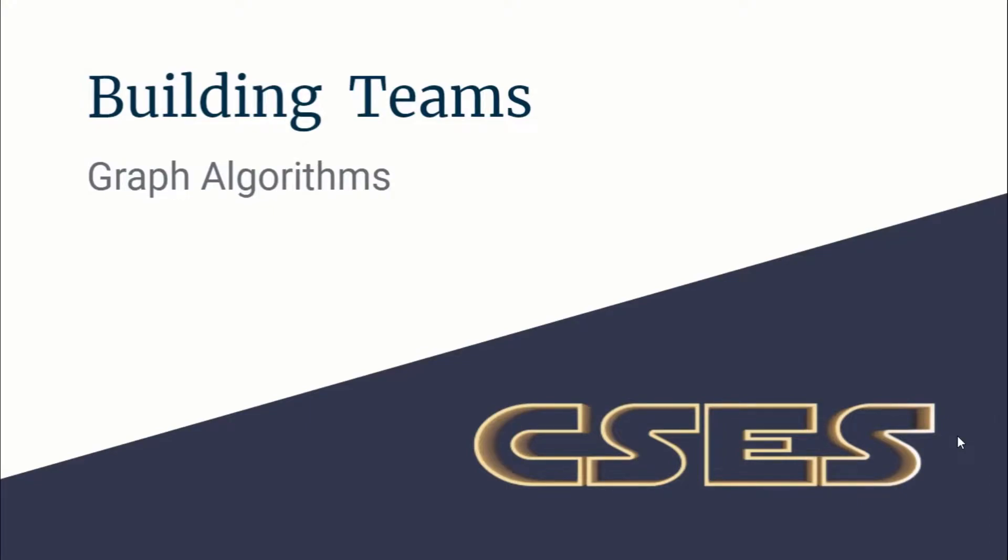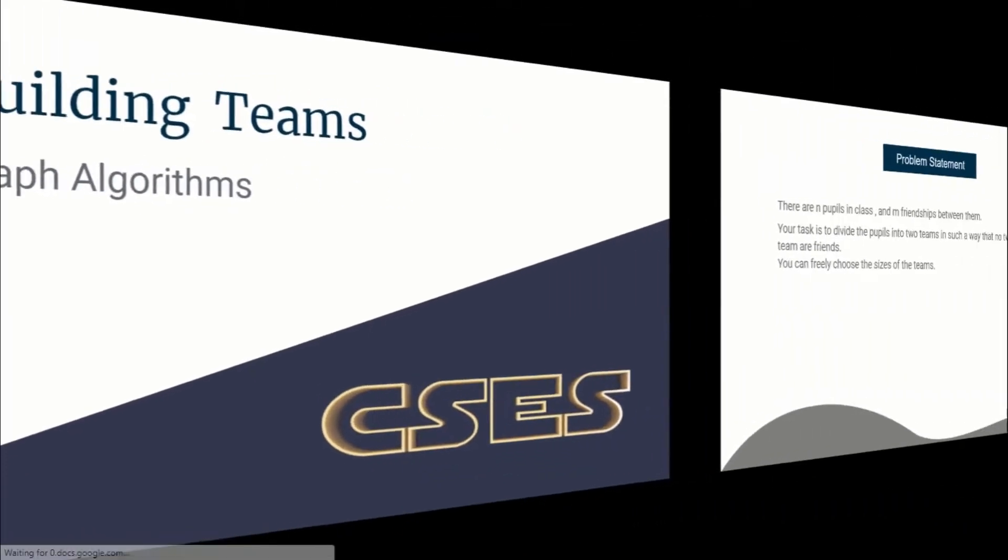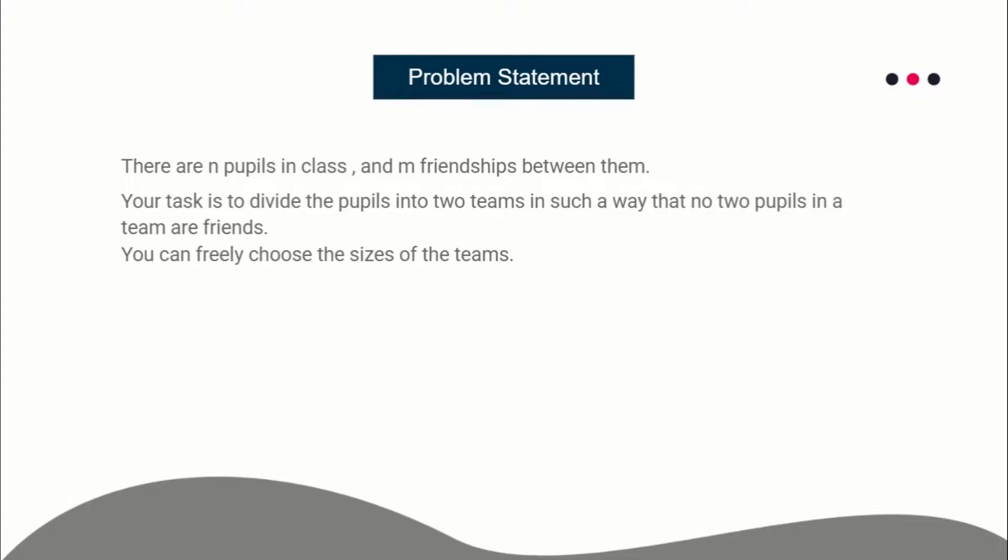Hello guys, this is Code in Code and this is a video editorial for the problem Building Teams taken from CSES graph algorithm series. So let's see what the problem says. There are n pupils in a class and there are m relationships between them.